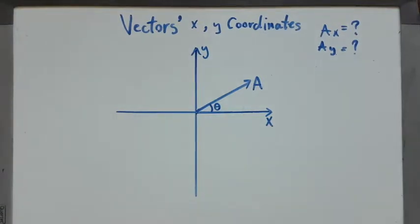Okay everyone, I would like to find the x and y coordinates of a vector. I have a vector here with angle theta.